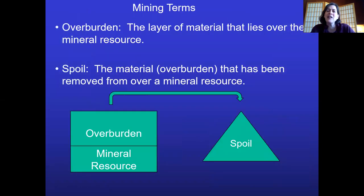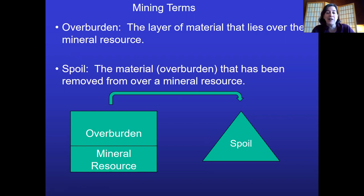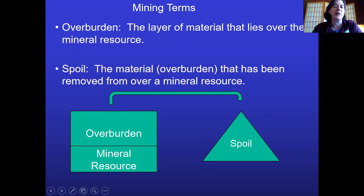When you mine coal or oil shale, you generally have a layer of material on top that has to be removed to get to the resource. When you put that material off to the side, it's called the spoil — same stuff, just called different things depending on whether it's still over the mineral resource or off to the side. To extract oil shale you have to take off the overburden first, and when you pile it somewhere else it becomes spoil.